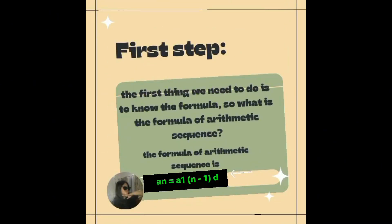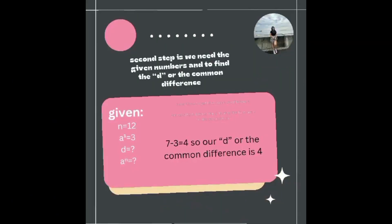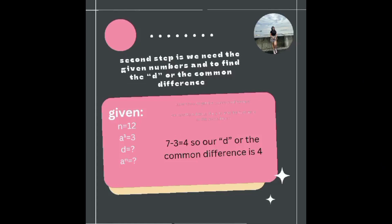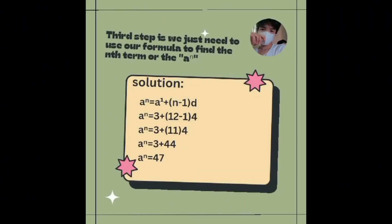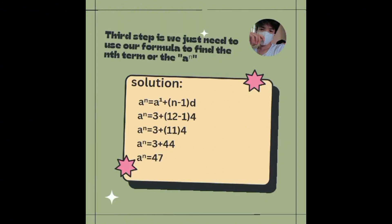The formula is: a sub n equals a sub 1 plus the quantity of (n minus 1) times d. For example, a sub n equals 3 plus the quantity of (12 minus 1) times 4. A sub n equals 3 plus the quantity of 11 times 4. A sub n equals 3 plus 44. A sub n equals 47.